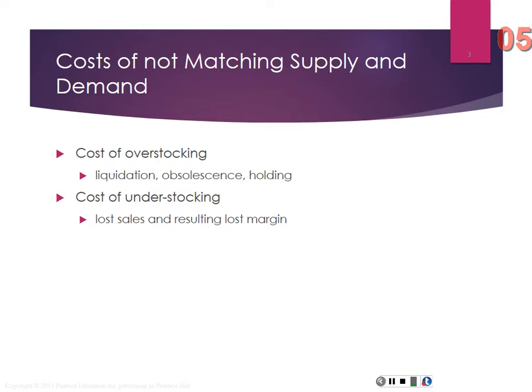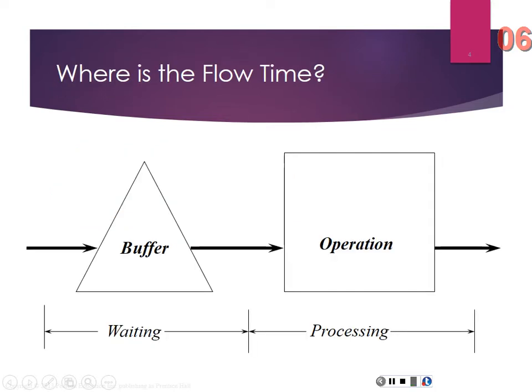Inventory is working capital, so reducing inventories means less working capital. Inventories arise because of a mismatch between demand and supply. There are costs associated with matching supply and demand: overstocking costs include interest expense for holding, physical space, and obsolescence risk. Understocking costs include lost sales — if you don't have the product your customer wants, you lose the margin on that sale. All inventory in the buffer is just waiting, so we want to try to reduce that buffer.